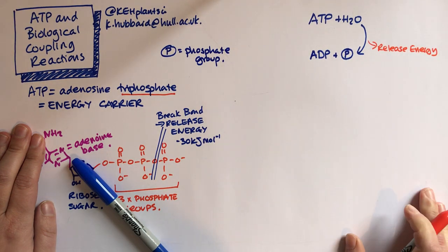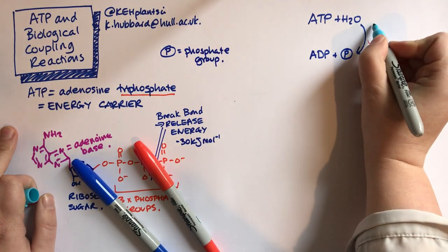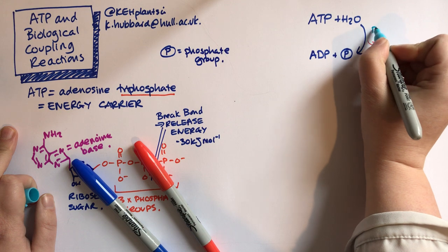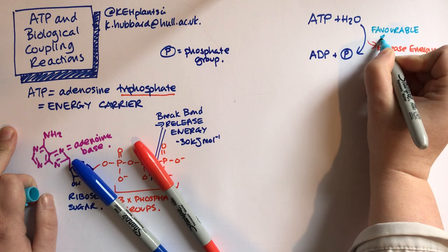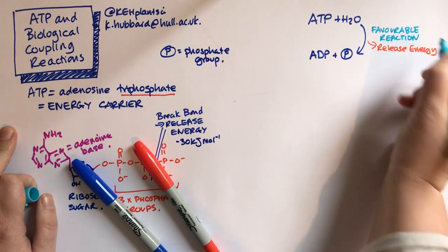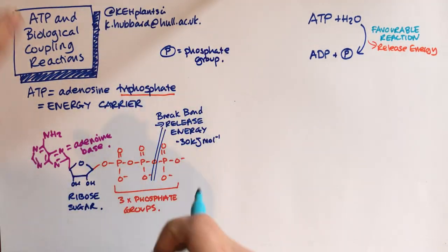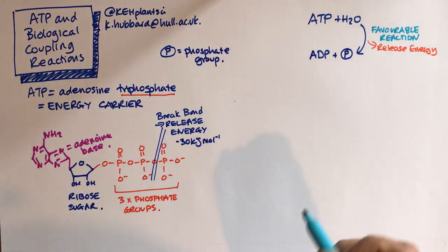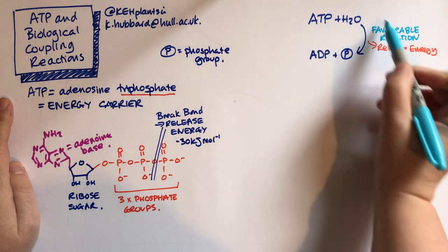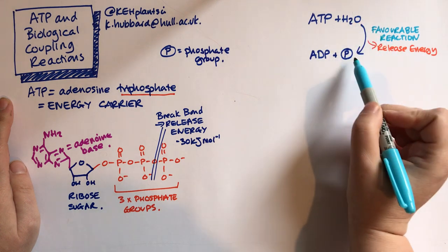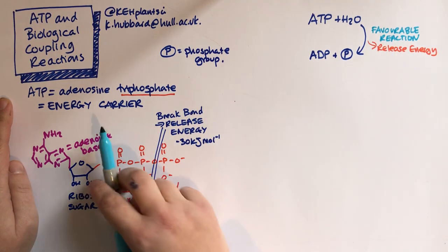And because that reaction releases energy, we can call it a thermodynamically favourable reaction. So in terms of the energy of the cell, this reaction wants to happen. If it's given the opportunity to happen, then it will do so. That doesn't mean that ATP is unstable - ATP is a stable molecule. But if the reaction is able to happen, if we've got the right environment for it, then because it releases energy, it will be thermodynamically favourable.